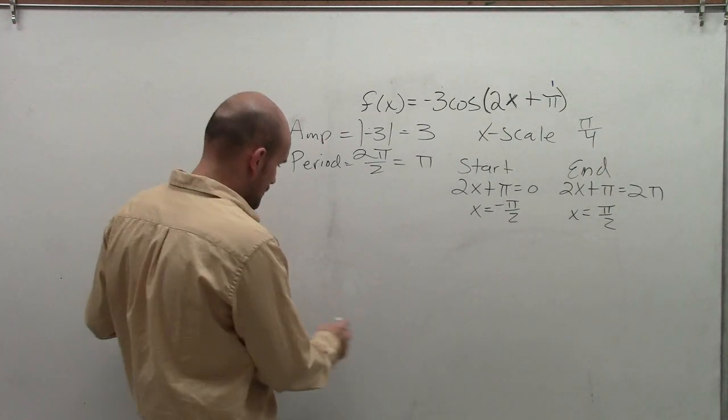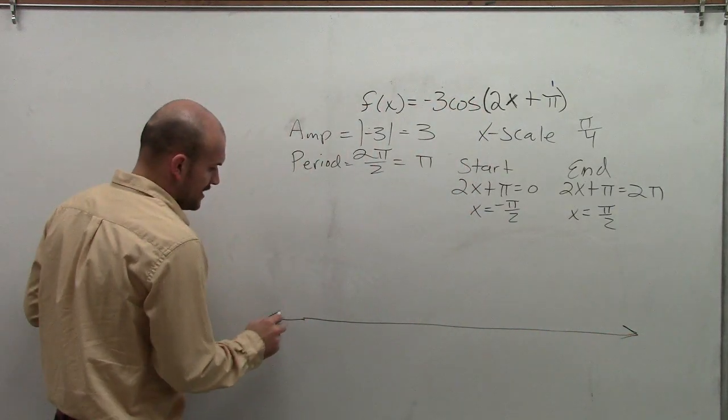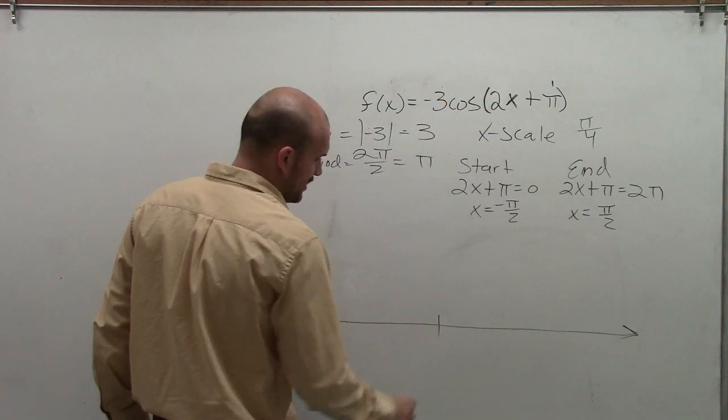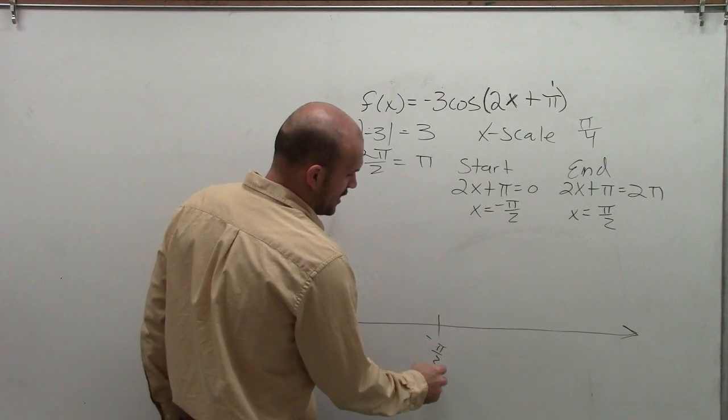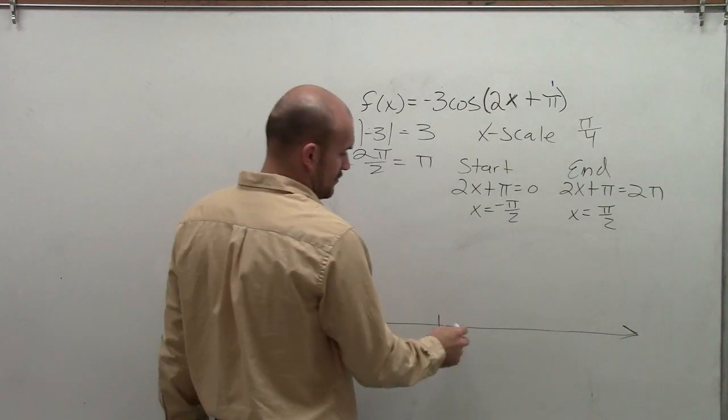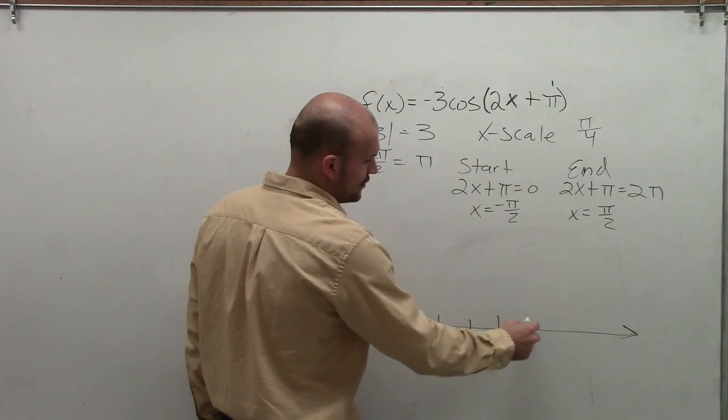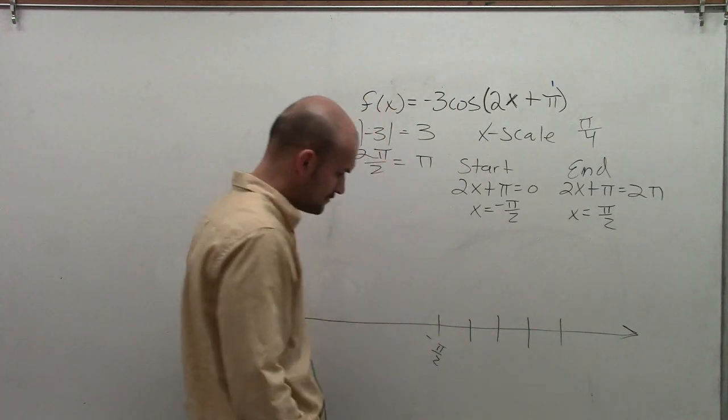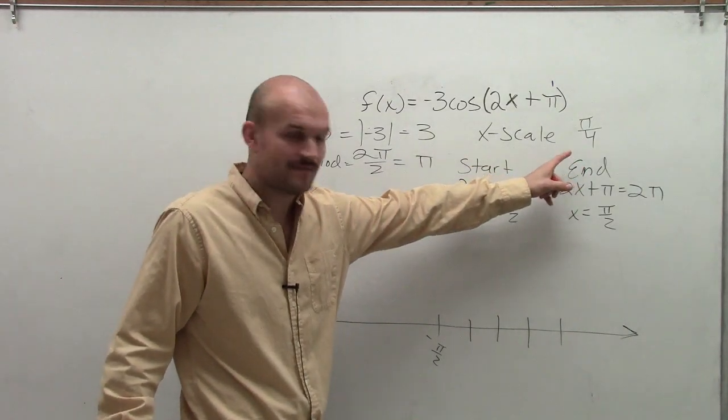So there we go. What we're going to do now is I'm going to draw my x-axis. And the first thing I'm going to do is just make a point where there's going to be my starting point, which is at -π/2. Therefore, I'm going to have four important points. Each one is π/4 away from each other. So I'm going to have 1, 2, 3, 4.